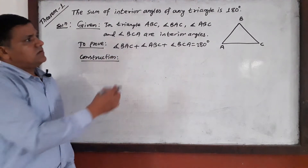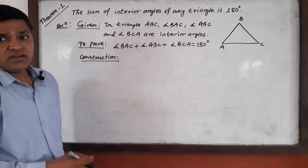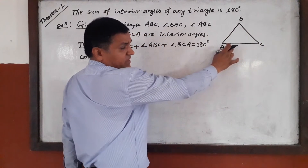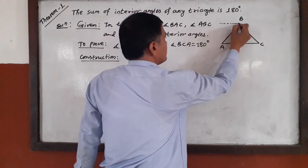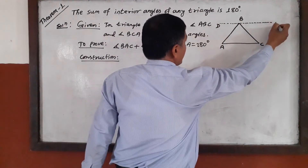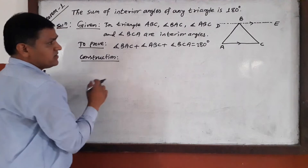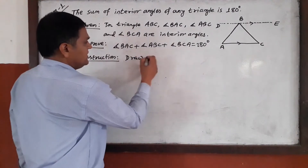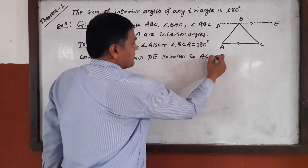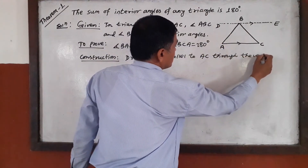As necessary, construction means the necessary lines that we need to draw in the figure. For the construction, we draw a straight line DE through the vertex B, parallel to AC. In construction: draw DE parallel to AC through the vertex B.